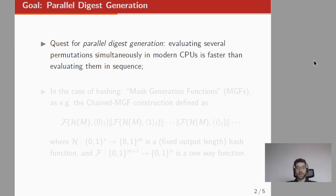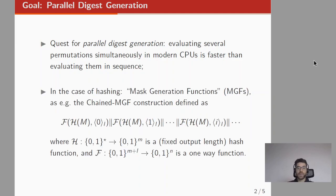In the case of PRF this goal can be achieved by making use of the Farfalle construction proposed by Bertoni et al. in 2017. In the case of hashing this goal can be achieved by making use of mask generation functions. For example here we have the Chained-MGF construction, where H is a fixed output length hash function and F is a one-way function applied to the concatenation of the output of this hash function with an index i.